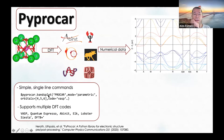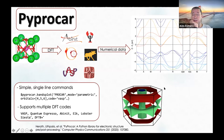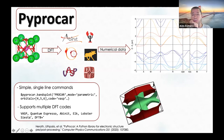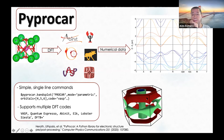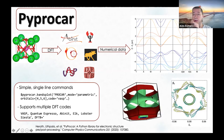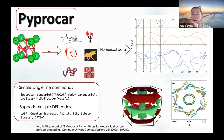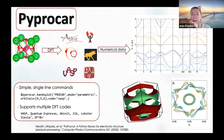Here is a very simple example where we read a PROCAR file, which is the output from VASP, and plot the band structure. We can also plot the Fermi surface—I'll be discussing new implementations in this area—and we can also plot the spin structure, which I'll discuss in detail as well.